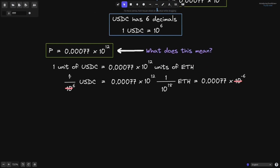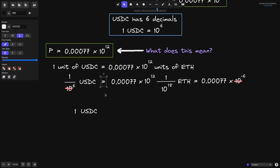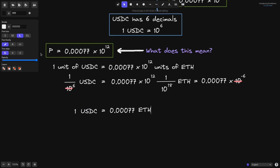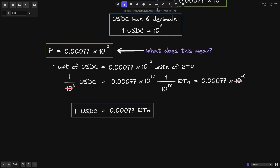So we can now say that 1 USDC is equal to 0.00077 ETH. P equals 0.00077 times 10 to the 12 means that 1 USDC is equal to 0.00077 ETH — this is the price of USDC in terms of ETH. But what we're interested in is the price of ETH in terms of USDC, so we need to flip P to 1 over P.